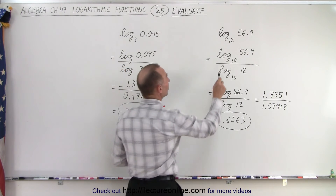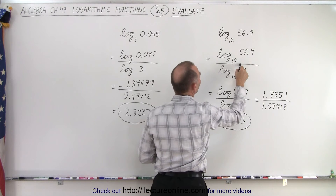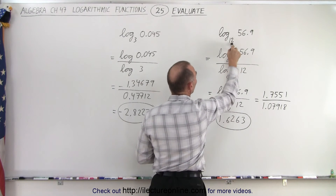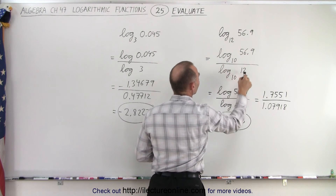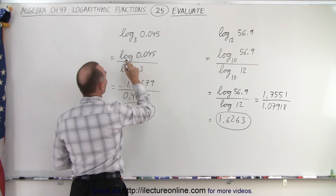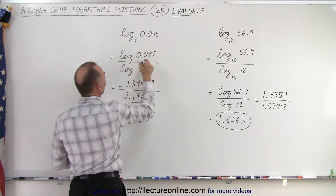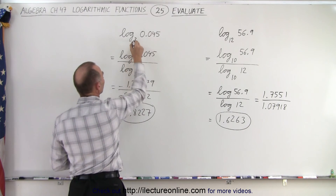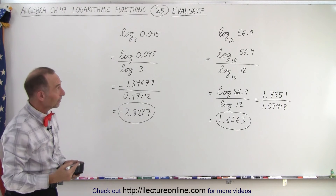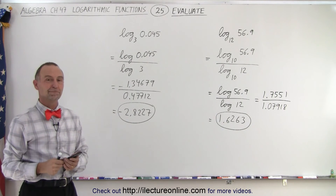Again, that is as easy as it gets if you remember to do the right process. You take the log to a different base of the number, divided by the log of the old base. The log to a new base of the number, divided by the log of the old base. And then you just evaluate using your calculator, and that is how it's done.